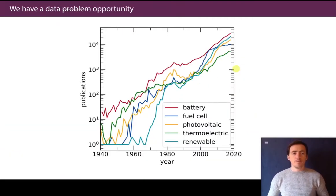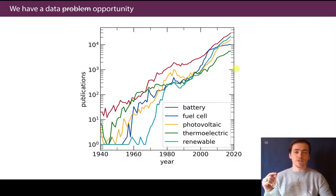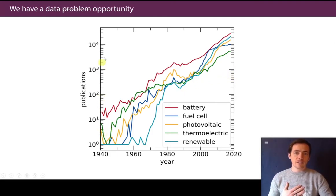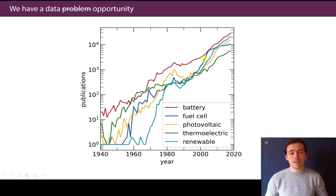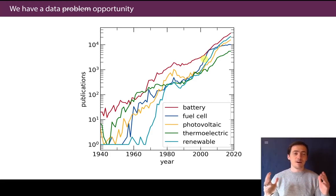In the materials science world, we have a data situation — you might be tempted to call it a problem, but it's also an opportunity. If you look at the number of publications as a function of year on a log axis, the line looks linear, which means it's actually exponential growth. The fields related to energy that I've listed here are seeing about 10,000 papers per year — a mind-boggling number of studies.